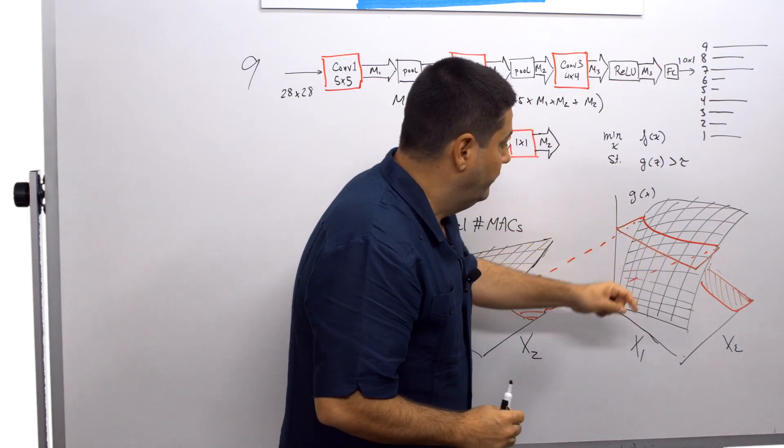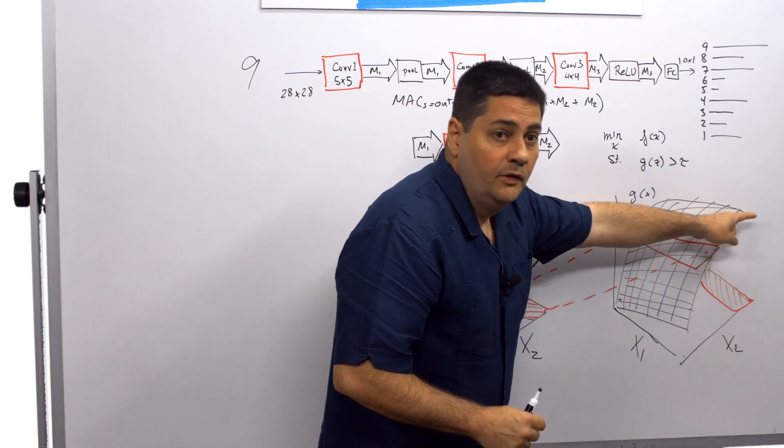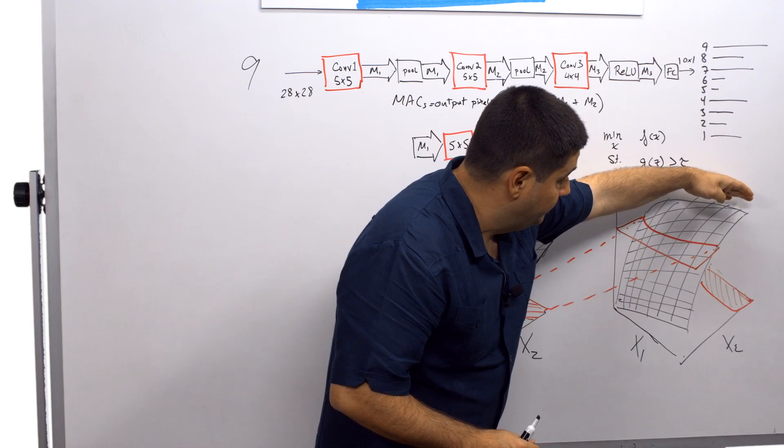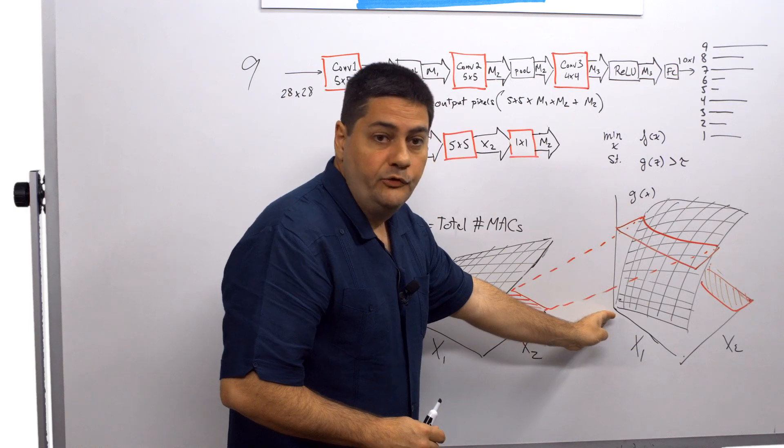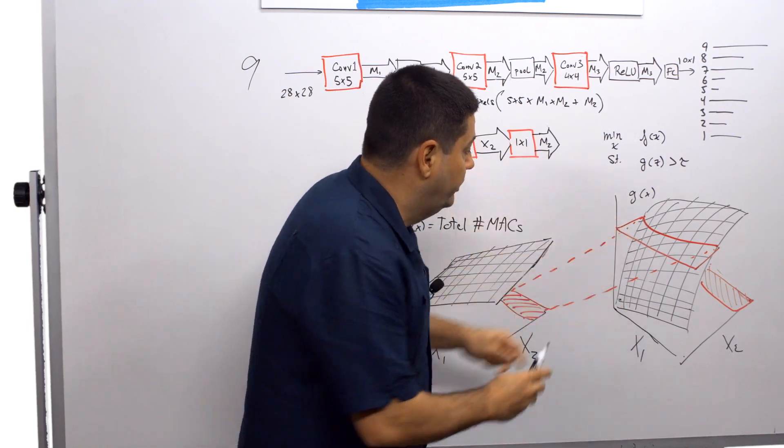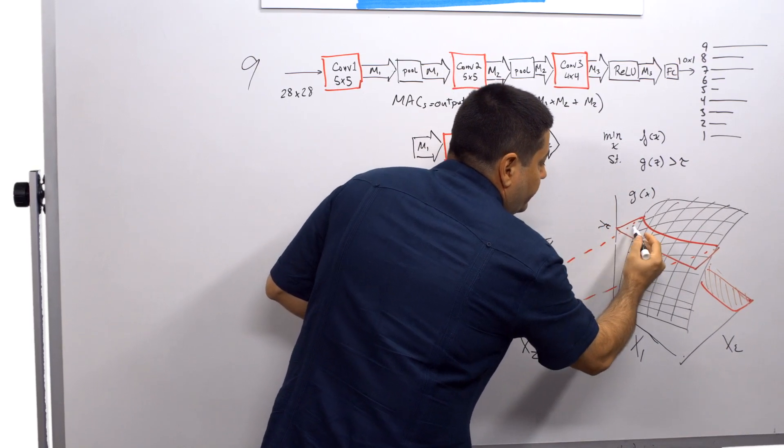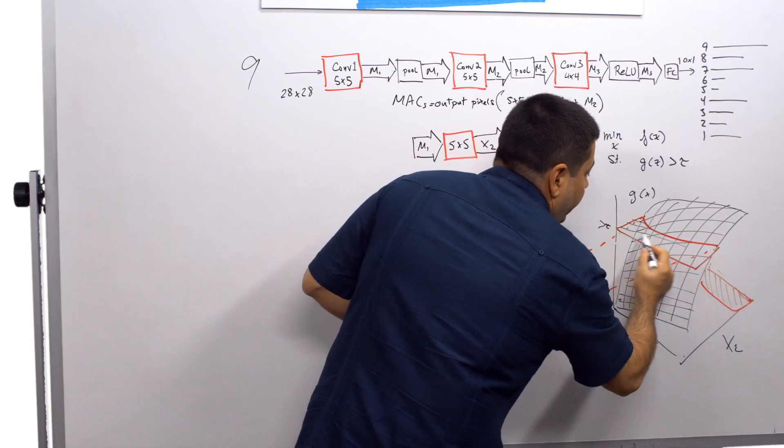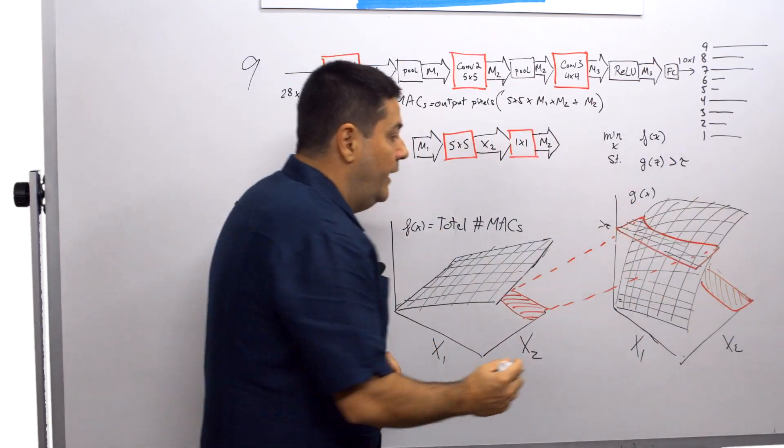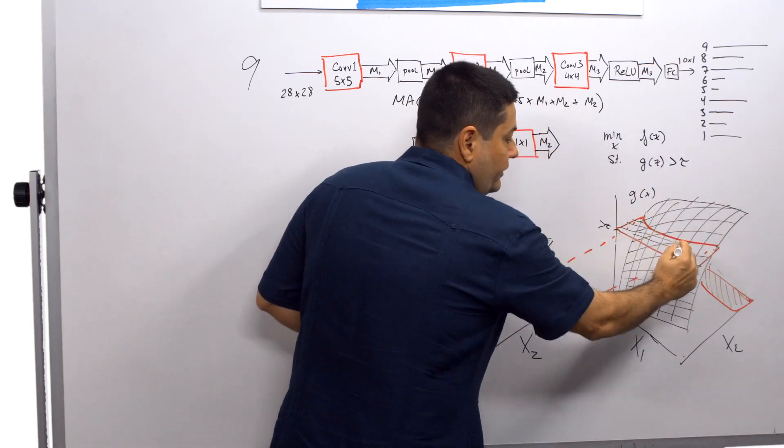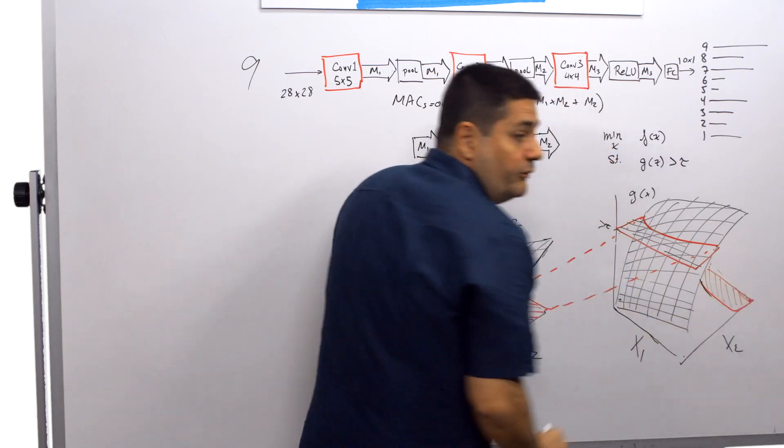And here we have an accuracy, which when x2 and x1 are at a max value, we have maximum accuracy. And as you reduce x2 and x1, we go all the way down to zero accuracy. So if we want to hold g of x greater than tau, we set this level here tau, we create a plane that cuts through this accuracy function. And then if we project down everything that's above this level down to the parameter space, we have an optimization region.